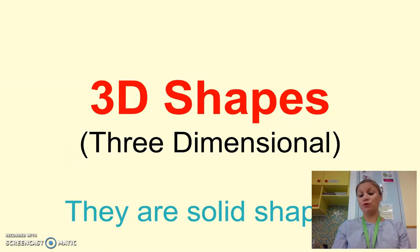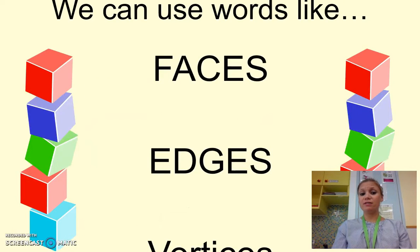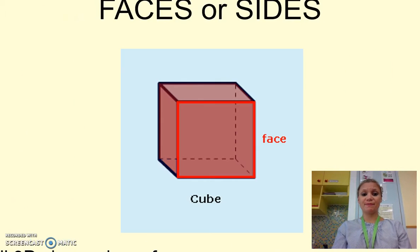They are basically solid shapes and not flat shapes. We're going to use words like faces, edges and vertices to describe these 3D shapes. A face, or sometimes known as a side, is the flat part of a shape. You can see here on the cube.